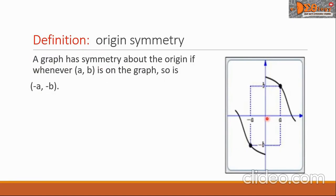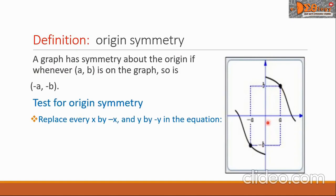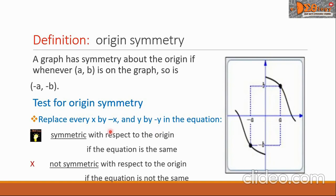I have here a graph — the origin is here. The point (a, b) is here while the point (-a, -b) is here. We can see symmetry with respect to the origin on this graph. To test for origin symmetry, we will replace every x by negative x and y by negative y. We say the graph is symmetric with respect to the origin if the equation is the same, or not symmetric if the equation is not the same.